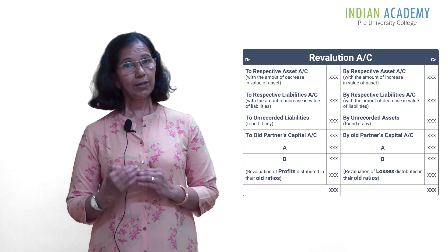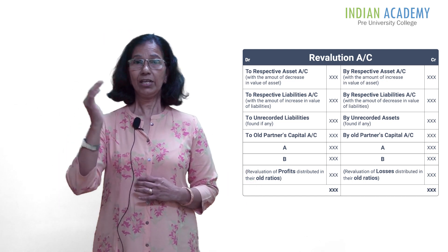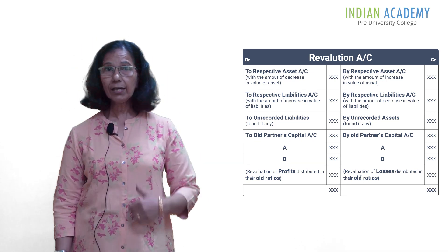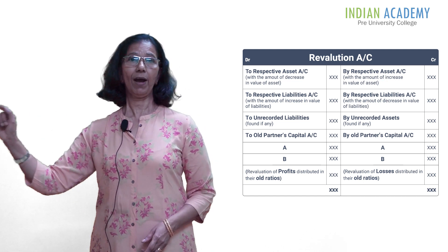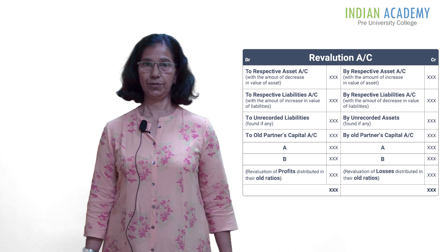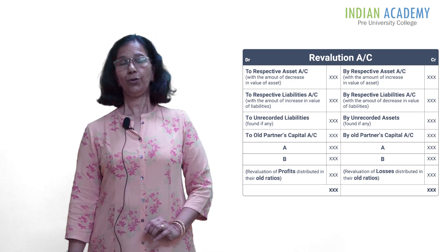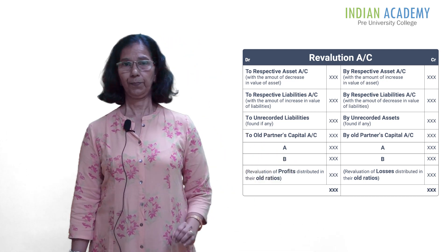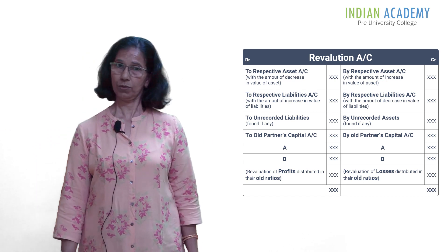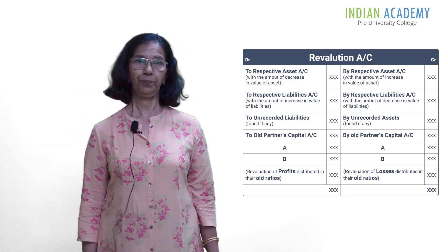Coming to liabilities: if the liabilities have increased, it's a loss to the firm as they have to pay more. So the increased liability will be recorded on the debit side of the revaluation account. If the liability is reduced or decreased, it will be credited to the revaluation account. To summarize: increase in asset — credited to revaluation; decrease in asset — debited to revaluation. If liabilities increase, debit to revaluation; if liabilities decrease, credit to revaluation.